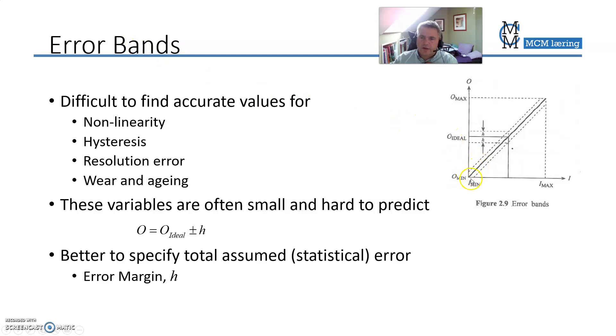So you say that the output should follow this line, the whole line here, but your true output-input relation is somewhere between the two dotted lines. So the distance between the dotted lines is called the error band. So you have the true relation here as a filled line and then the error band, which is up and down from there.